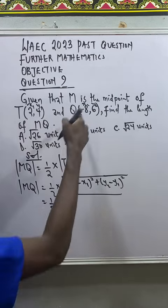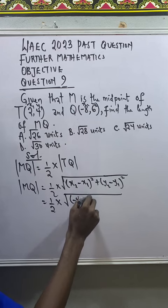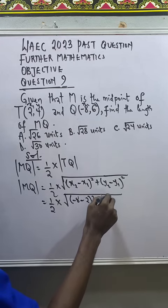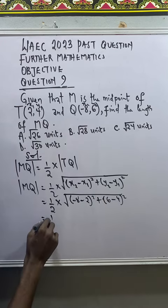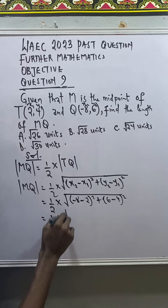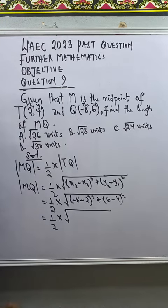Good. x2 minus x1 will give me -8 minus x1, which is -2 squared, plus y2 minus y1, which is 6 minus 4 all squared. This is 1 over 2 times square root of -8 minus 2, that will give me -10.